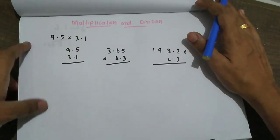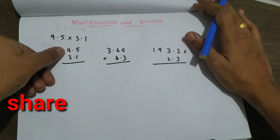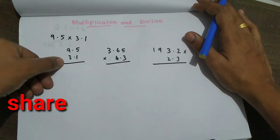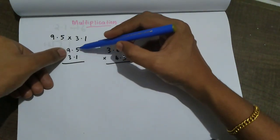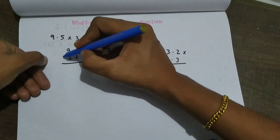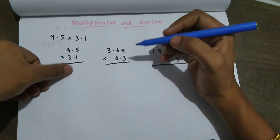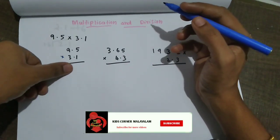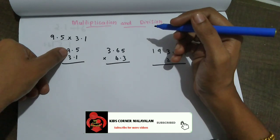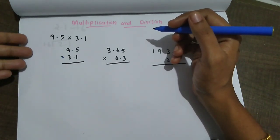This is multiplication. We are going to take a look at just two numbers and multiply them. For decimal multiplication, we pay attention to the decimal point — count how many decimal places are in each number.